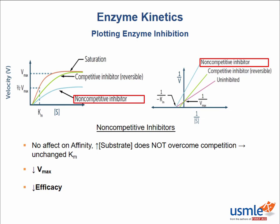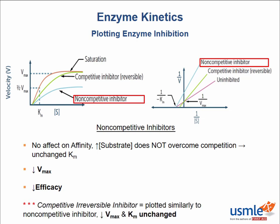Interestingly, an irreversible competitive inhibitor will be plotted similarly to the non-competitive inhibitor. Remember, a competitive inhibitor resembles the substrate and binds the enzyme's active site, while a non-competitive inhibitor does not. Like non-competitive inhibitors, irreversible competitive inhibitors will decrease Vmax and have no effect on Km. The reason is the irreversible covalent bond formed with the enzyme's active site, making the addition of more substrate pointless — it cannot knock the inhibitor away.